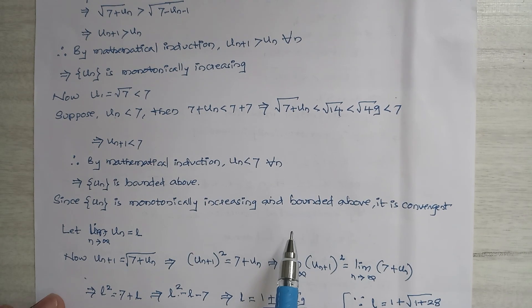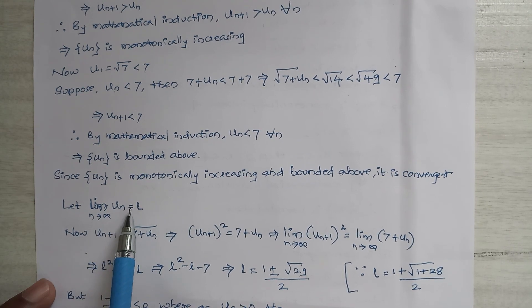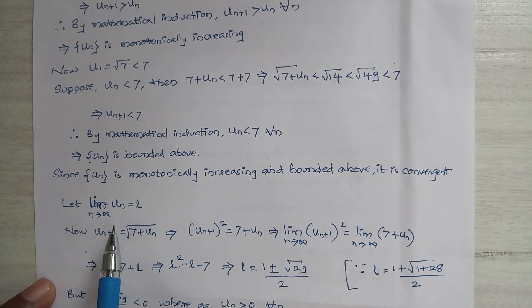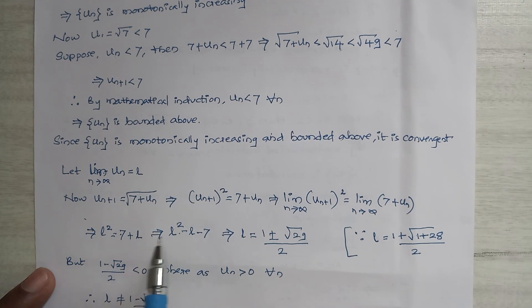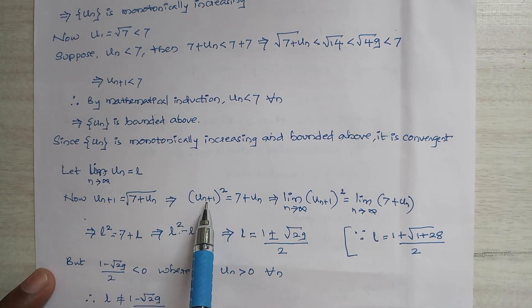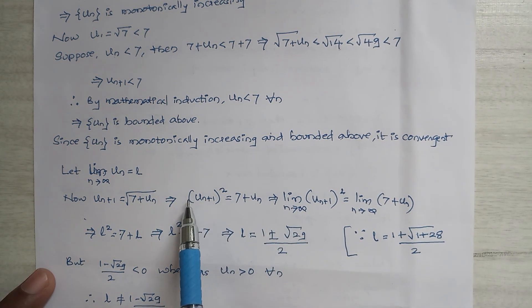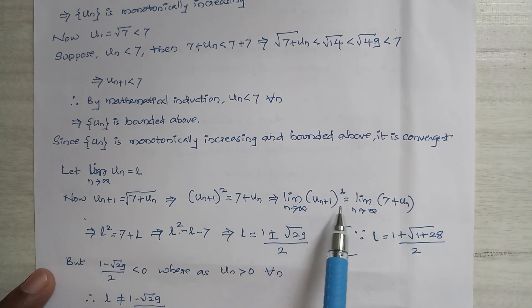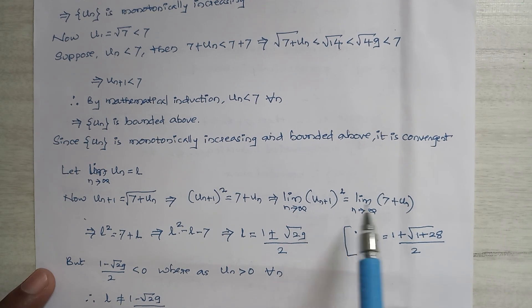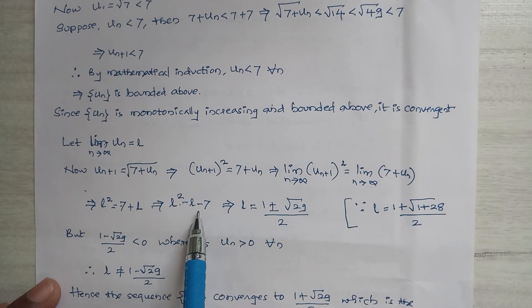Since un is monotonically increasing and bounded above, it is convergent. Let lim(n→∞) un = L, so lim(n→∞) un+1 = L also. Since un+1 = √(7 + un), squaring gives un+1² = 7 + un. Taking limits: L² = 7 + L.